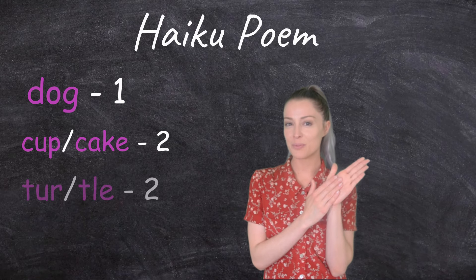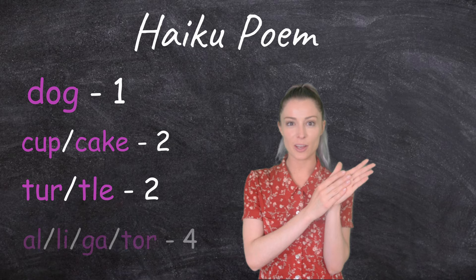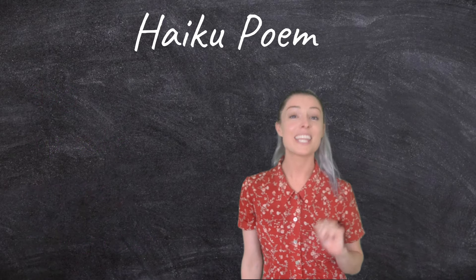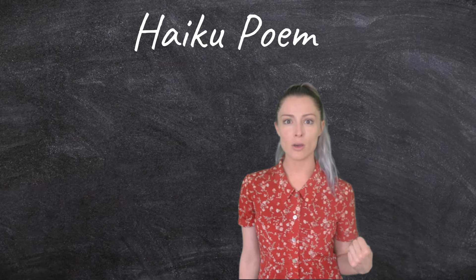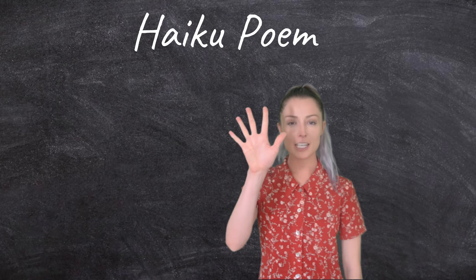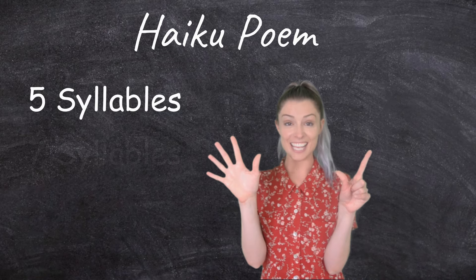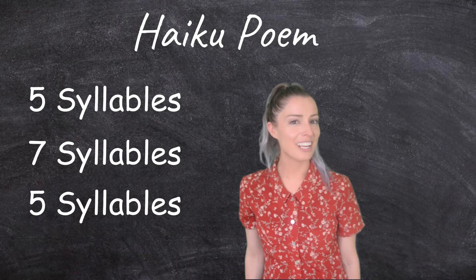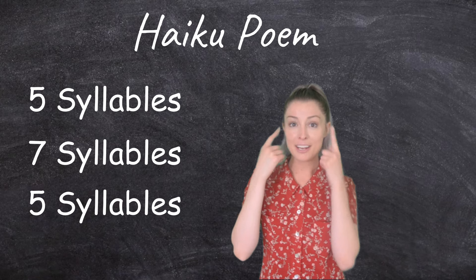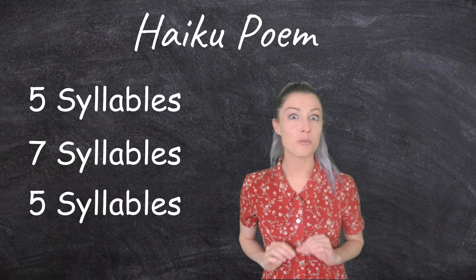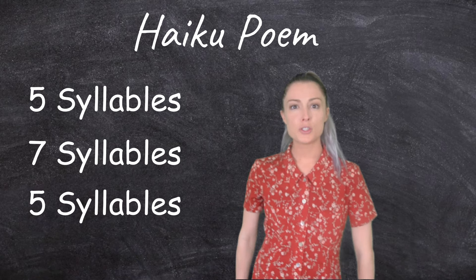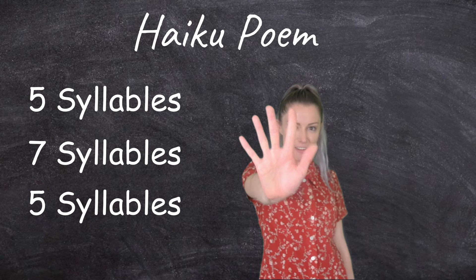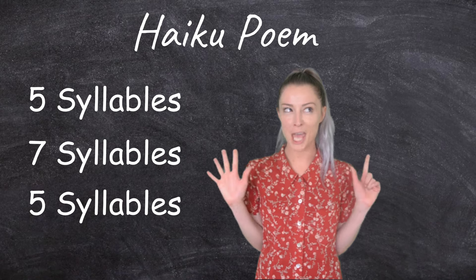For example: turtle, alligator. Haiku poems are very short and they're only three lines. The reason we need to know about syllables is because there are going to be five syllables in the first line, seven in the second, and five again in the third. You really have to think about and count out how many syllables before you write your line. Remember: first line five, second line seven, third line five.